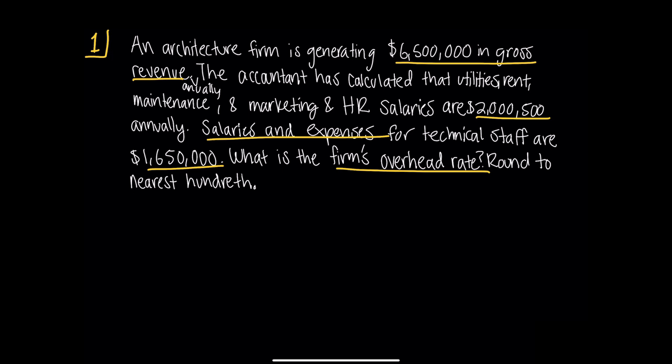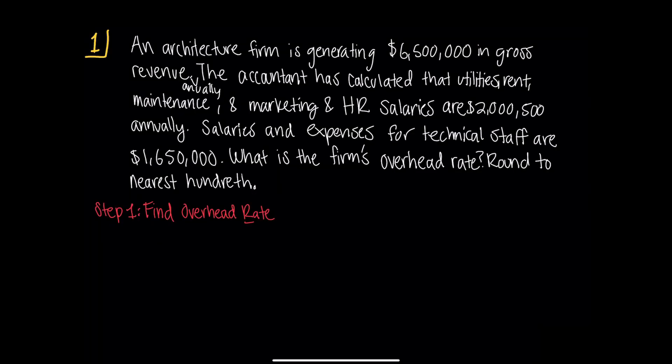Here's tip number four, which builds on the three tips from video one: underline, highlight, or cross out words — in other words, interact with the problem. Getting into this habit is an especially excellent strategy for preparing to take the exam online. Now to solve the problem, step one: identify what the question is asking you to find. The problem asks for the overhead rate to the nearest hundredth. Let's underline that in the problem.